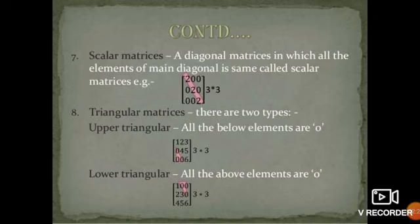Scalar matrices: a diagonal matrix in which all the elements of the main diagonal are the same is called a scalar matrix. For example, the main diagonal elements are the same.